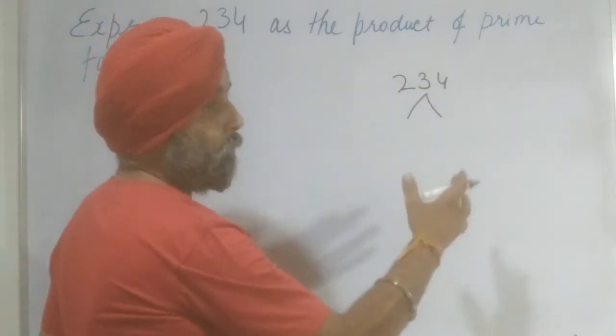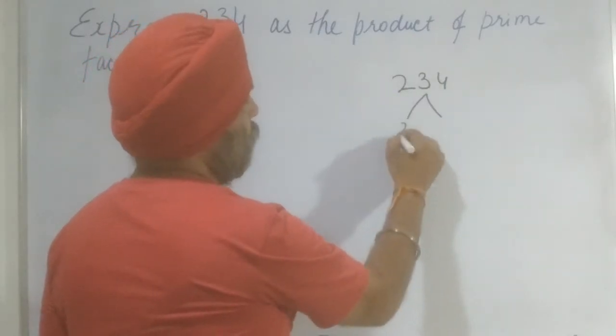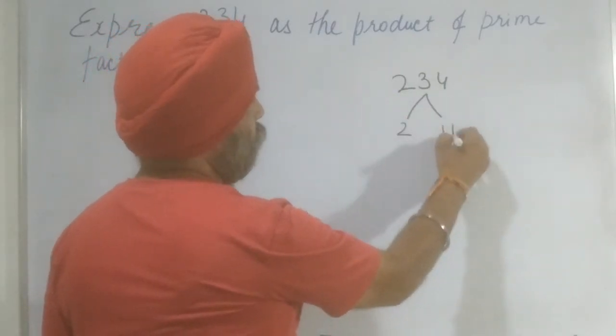Now we need to find by what number it is divisible. By the divisibility rules we should know that this number is divisible by 2. So let's divide it. 1, 1, 7.